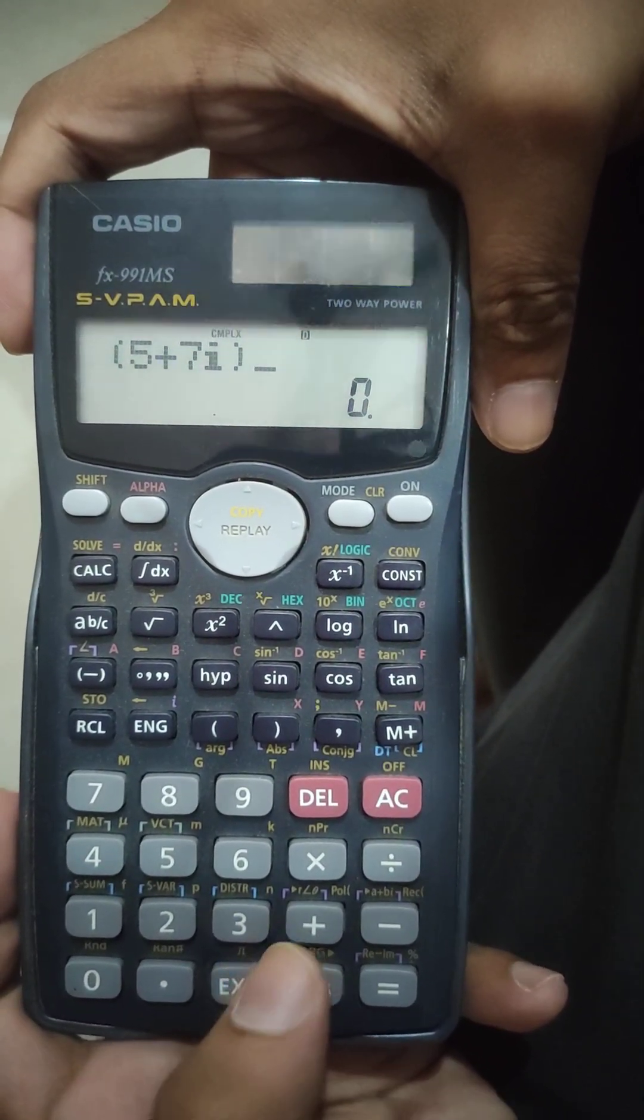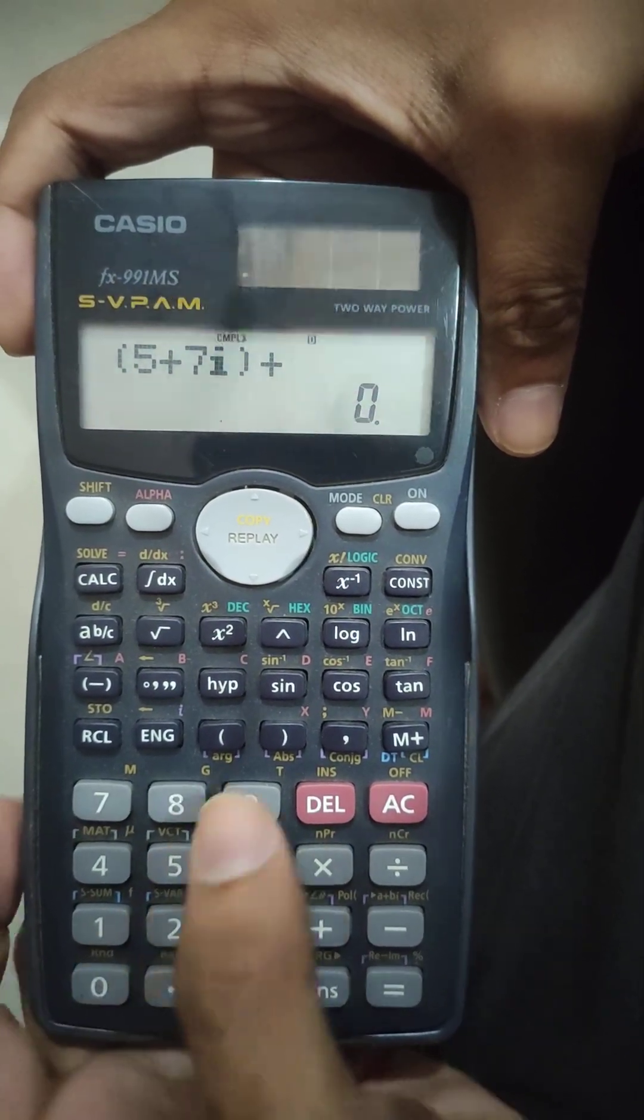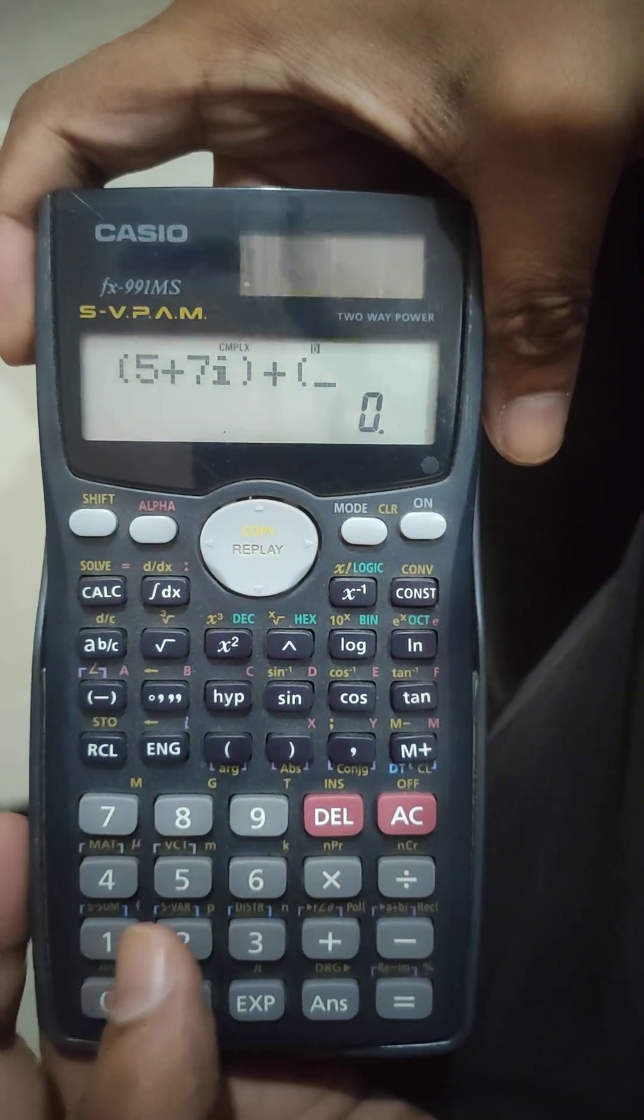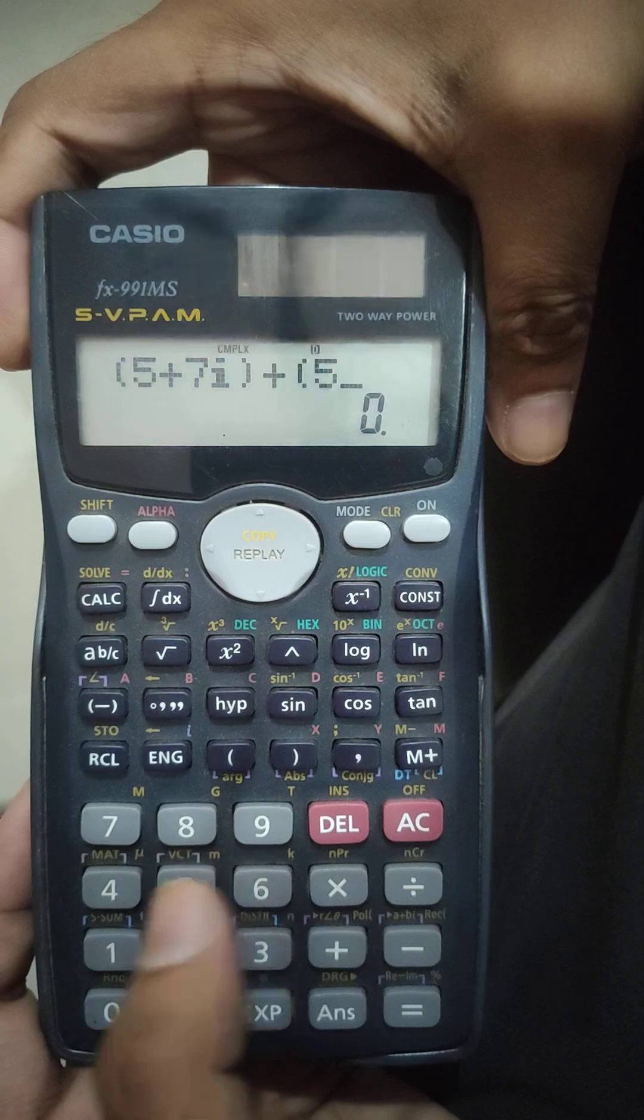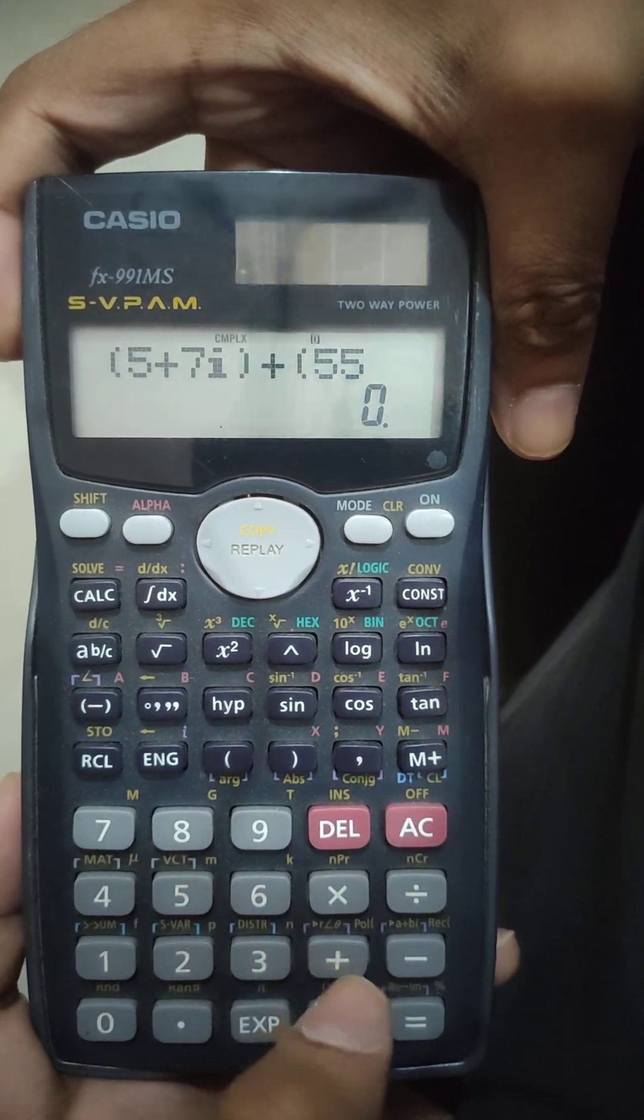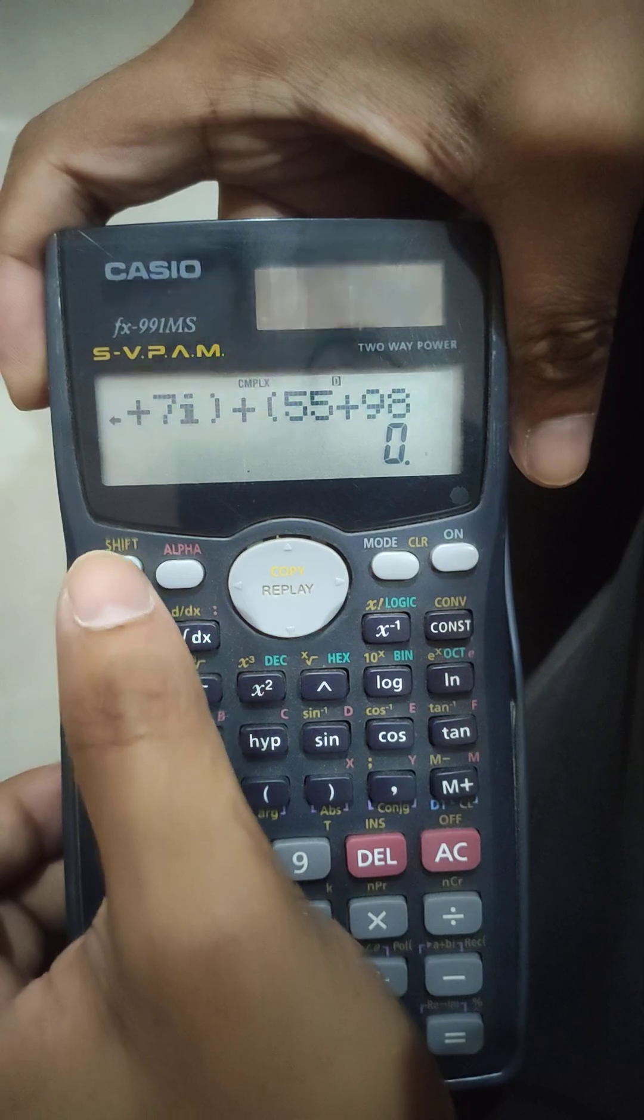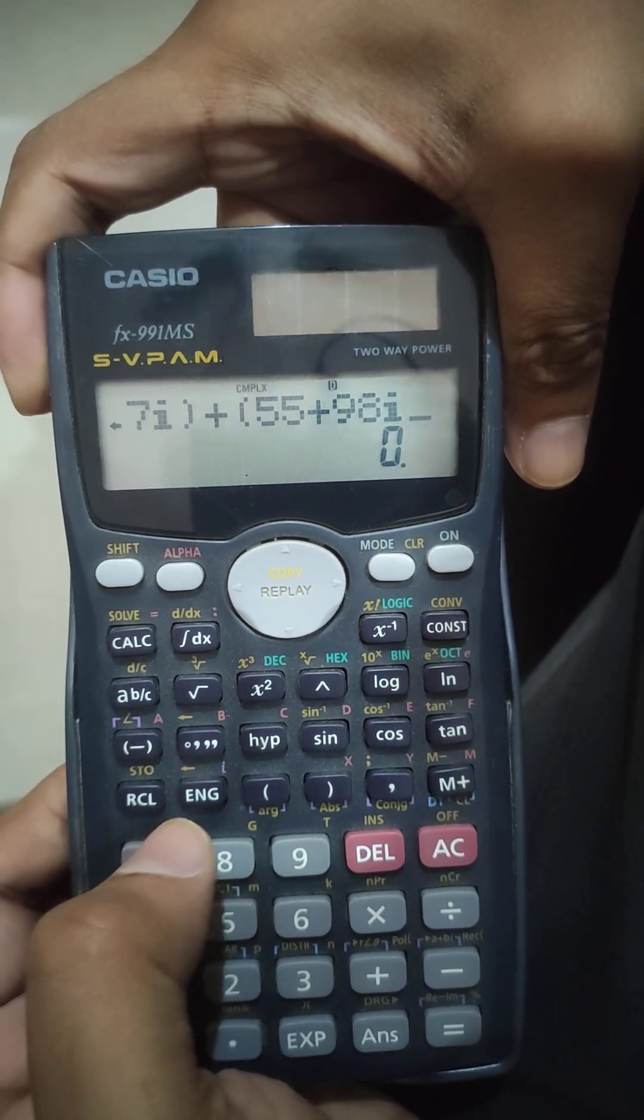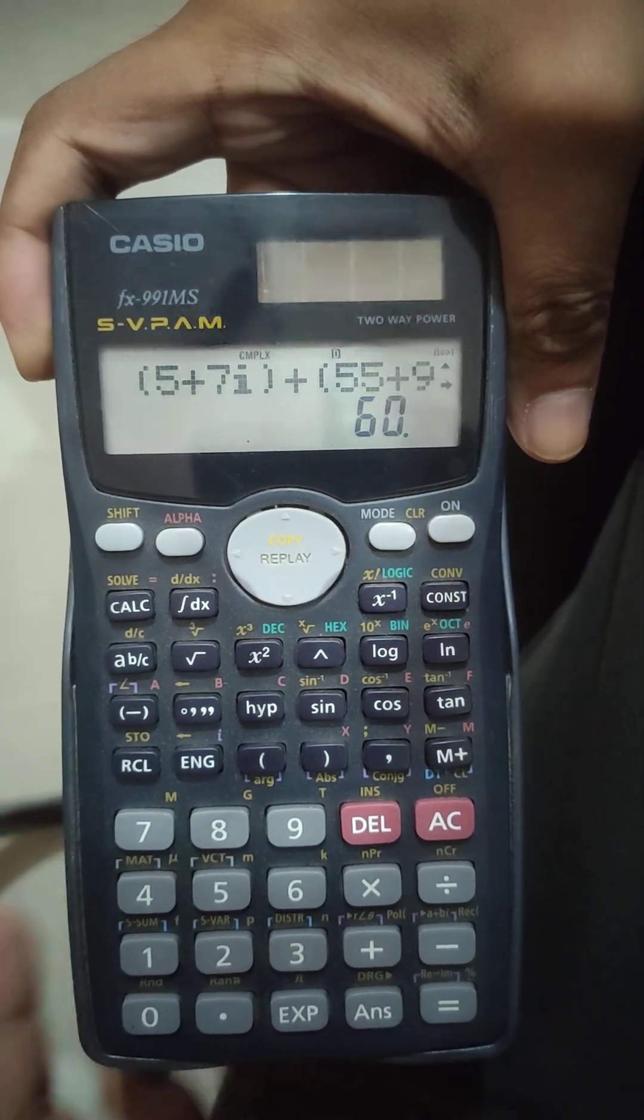In this demo, I will be using plus addition. You can use subtraction or multiplication, any other number. Press the other number, we follow the same principle. We press 55, plus 98, and shift, and then the imaginary part, iota, ENG, and then close the bracket, and then press equal.